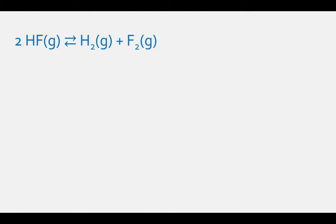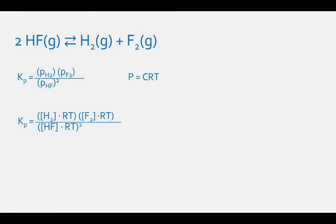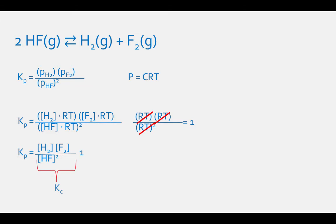Another example is 2HF gas in equilibrium with H2 gas plus F2 gas. Kp equals the partial pressure of H2 times the partial pressure of F2, divided by the partial pressure of HF squared. Substituting pressure equals concentration times RT, and canceling, we get RT times RT divided by RT squared, which equals 1. So the final equation is just the concentration of H2 times the concentration of F2 divided by the concentration of HF squared — which is the Kc expression. For this reaction, Kp equals Kc.